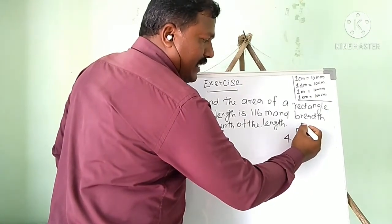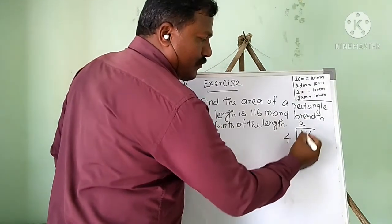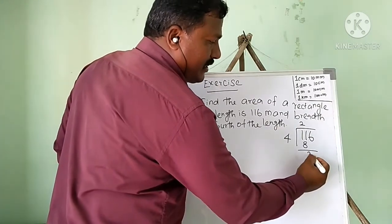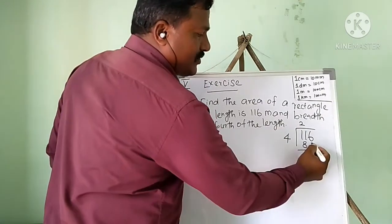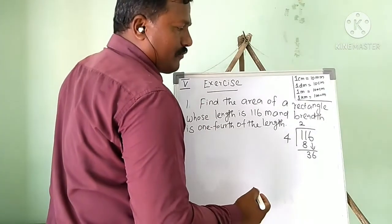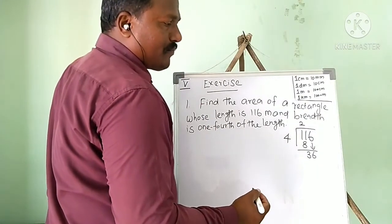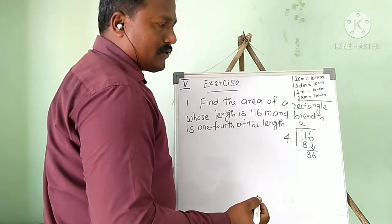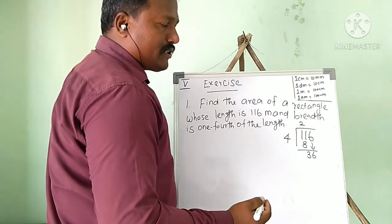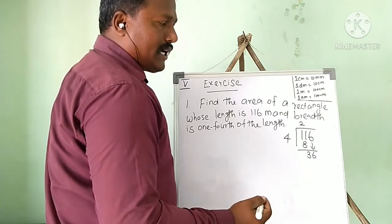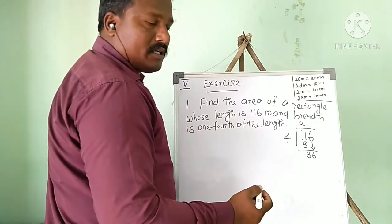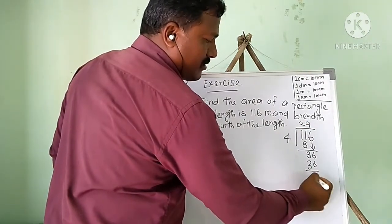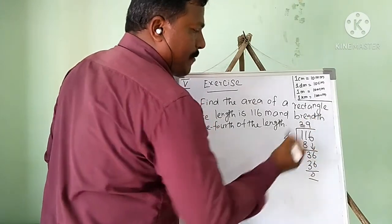We divide 116 by 4. Four fours are 16, five fours are 20, six fours are 24, seven fours are 28, eight fours are 32, nine fours are 36. Working through the long division: 116 divided by 4 gives us 29. So 29 meters is the one-fourth part, meaning the breadth is 29 meters.